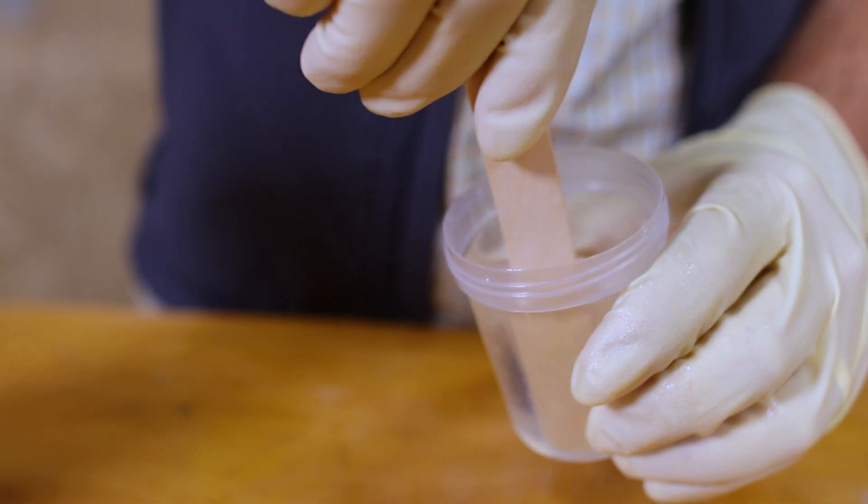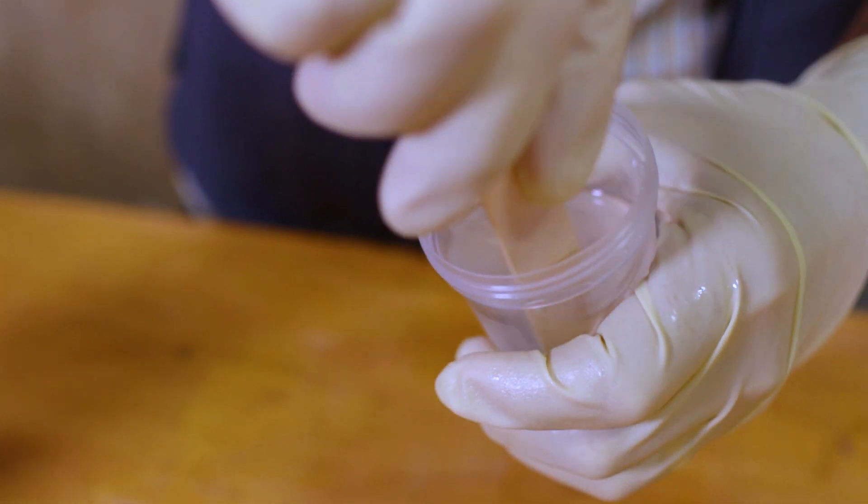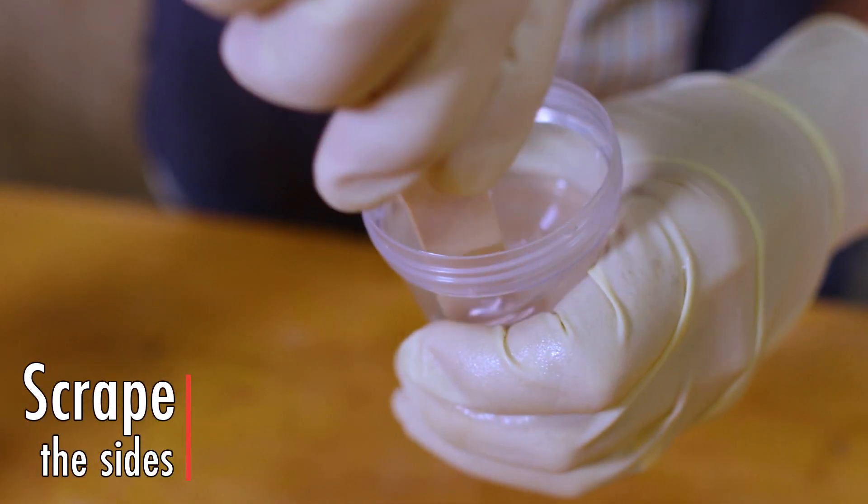For small amounts of liquid epoxy, this generally means thoroughly mixing the product in a graduated cup for at least 30 seconds. Scrape the sides to ensure a complete mixture.